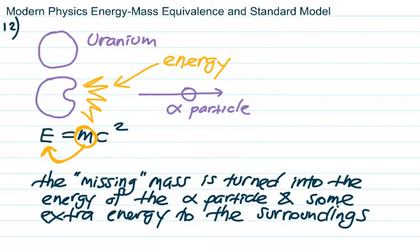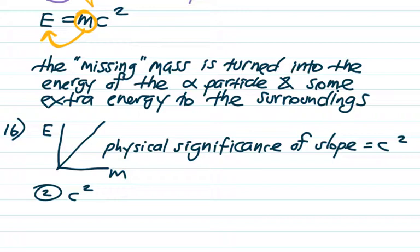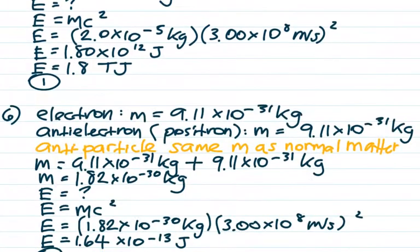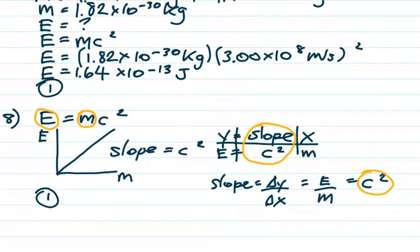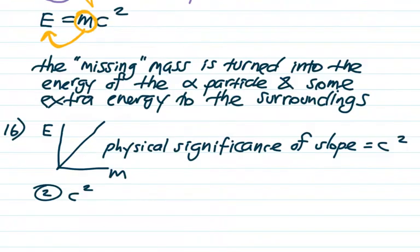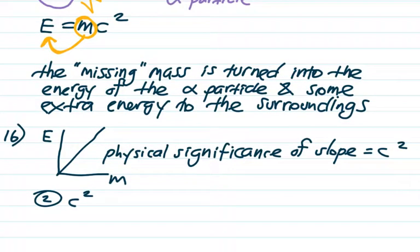Number 16 refers back to question 8 — they're actually asking about the physical significance of the slope, which is c squared, not c. Also, don't pick g. The reason g appears as a distractor is because for a weight-versus-mass graph the physical significance of the slope is g, and people start thinking that's true for any slope. No — just for weight equals mg. For this energy-versus-mass graph it's E equals mc squared, so c squared is the physical significance of the slope. Choice 2.